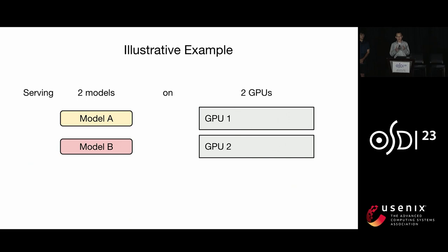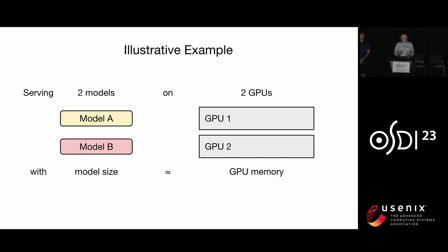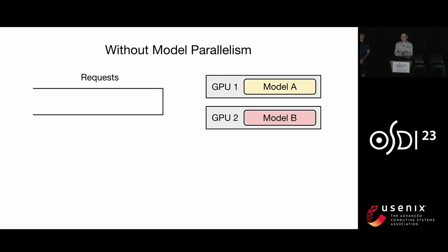Let me introduce this work's core idea with an illustrative example. Suppose we want to serve two deep learning models — model A and model B — on two GPUs, GPU 1 and GPU 2, with the fact that the model sizes are relatively large and close to the GPU memory, so we can only fit one model onto one GPU. Without model parallelism, the only way to serve both models is to put one model on each GPU — say model A on GPU 1 and model B on GPU 2.